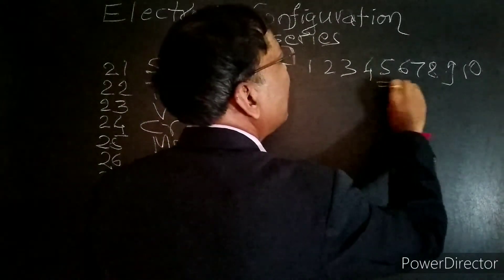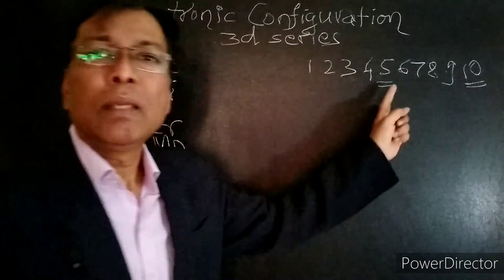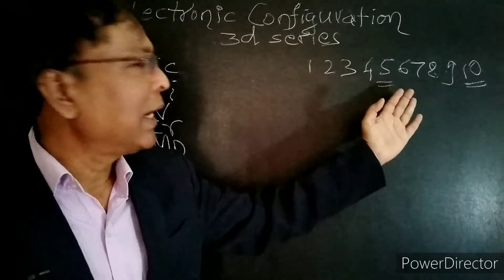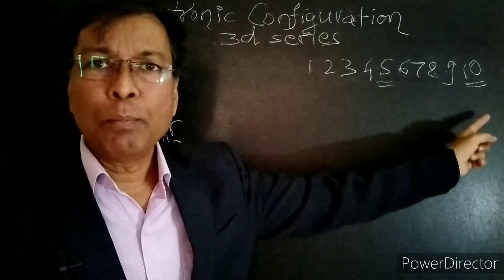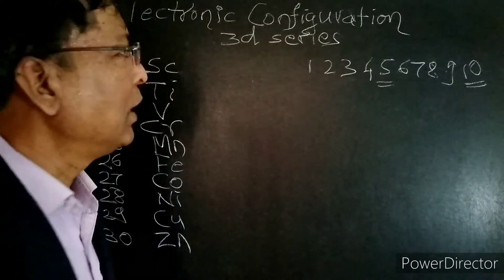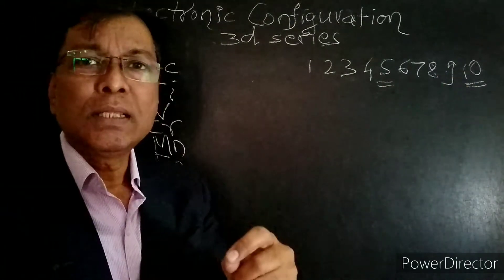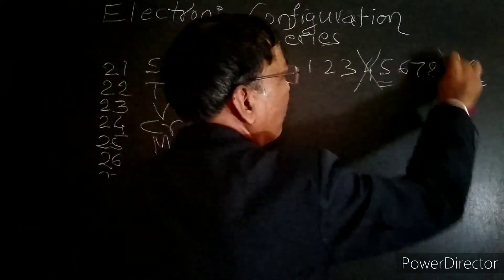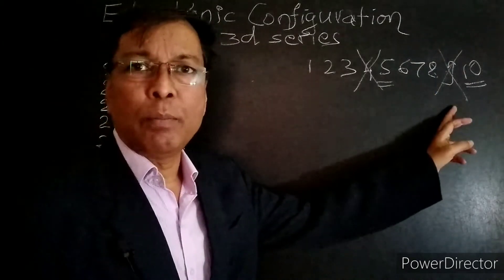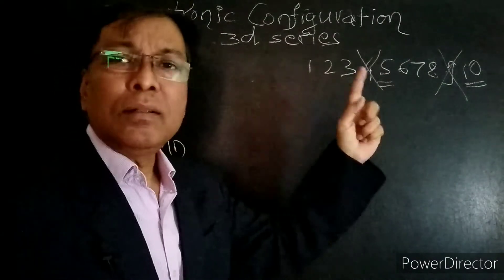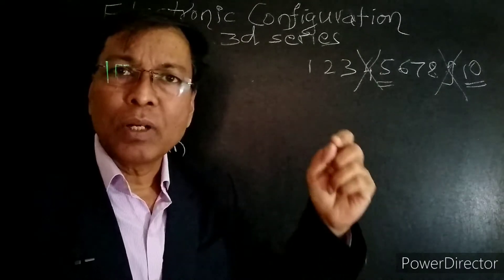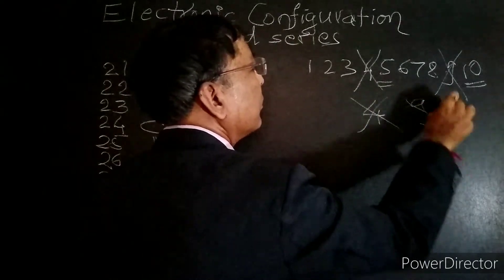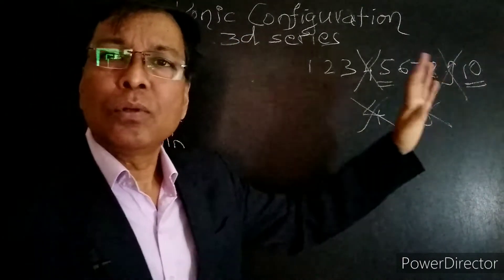We are going to discuss D5 and D10 specifically. D5 and D10 are more stable configurations — the half-filled and completely filled D-subshell are more stable. While writing the 3D series electronic configuration, we have to neglect number 4 and number 9. All remaining numbers we have to consider.